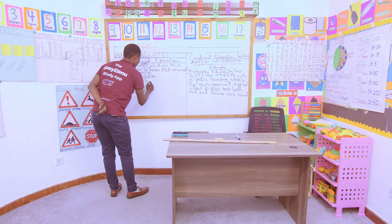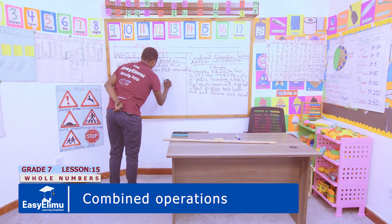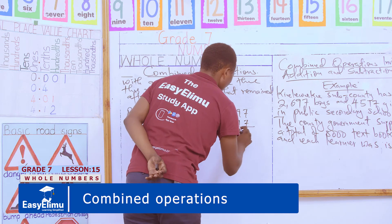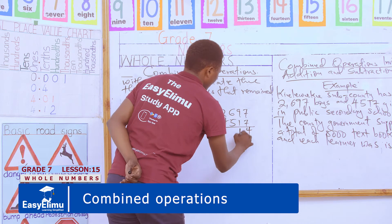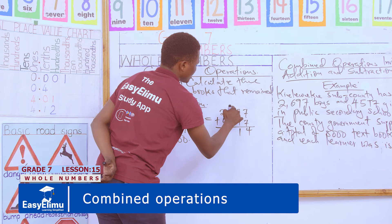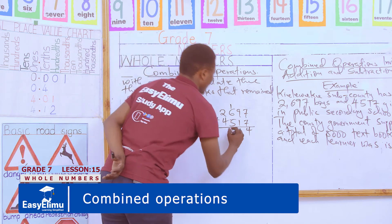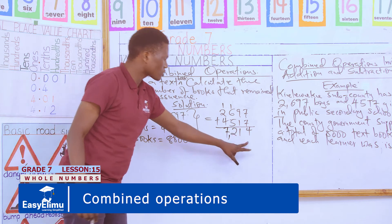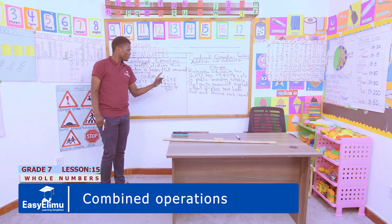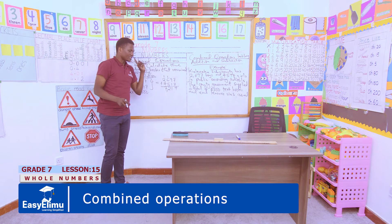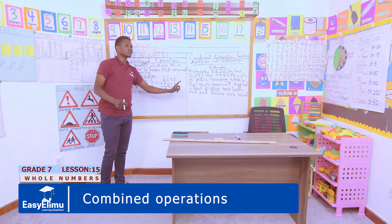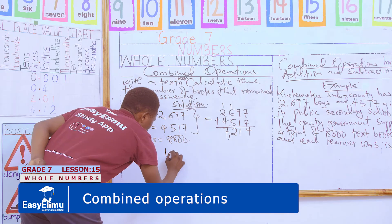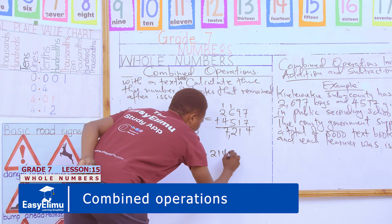Since each learner was issued one textbook, the total number of books issued equals the total population of boys and girls. So we get the total: 2,697 plus 4,517. Working it out: 7 plus 7 is 14, write 4 carry 1; 1 plus 9 plus 1 is 11, carry 1; 1 plus 6 plus 5 is 12, write 2 carry 1; 1 plus 2 plus 4 is 7. So books issued equals 7,214.